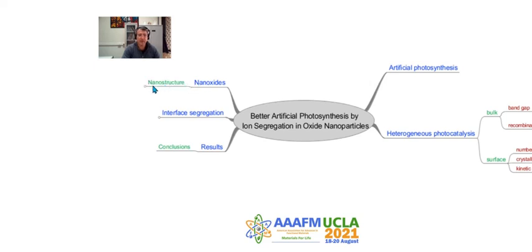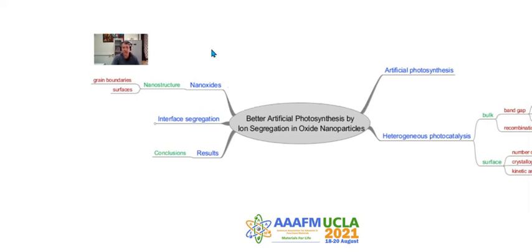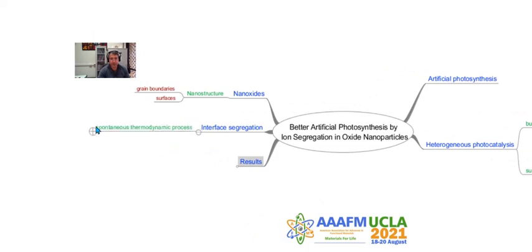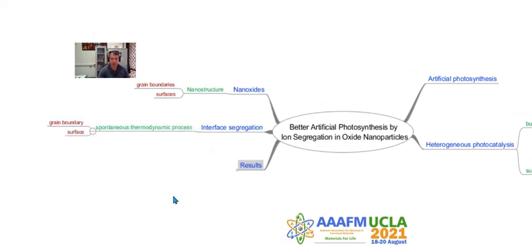These nano-oxides have a nano-structure. This nano-structure has two main parts: grain boundaries and surfaces. Grain boundaries are all interfaces between solids, and surfaces are the interface between a solid and a gas or a solid and a liquid. Interface segregation is a spontaneous thermodynamic process for both grain boundaries and surfaces, and it is a very important phenomenon that changes all surface or interface properties, the stability of particles, the reactivity of molecules, the reactivity of surfaces and interfaces, and the electrical conductivity.